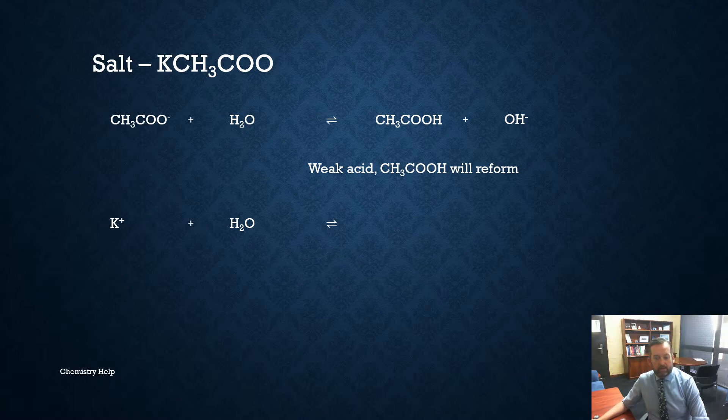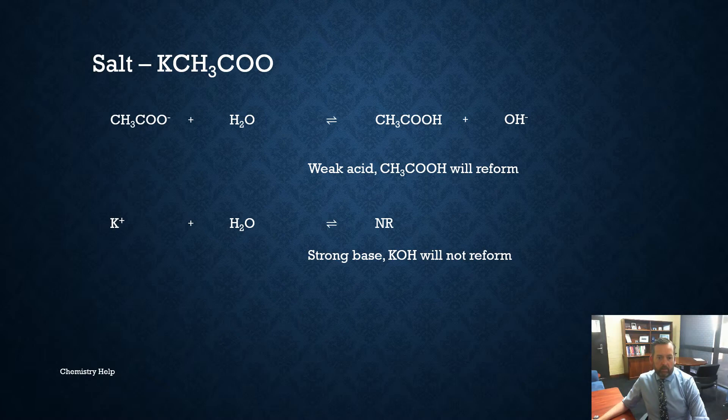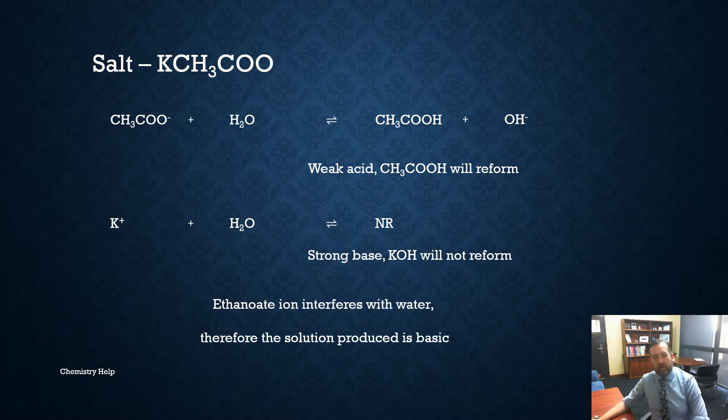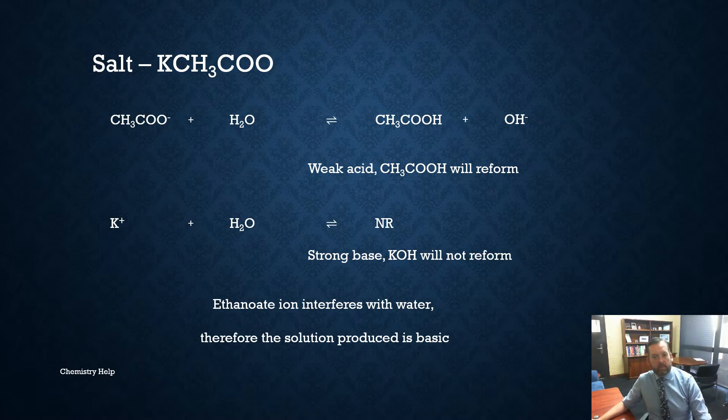The potassium ion will not react with water, will not reform the potassium hydroxide, so therefore we have no interference there whatsoever. So only the ethanoate ion interferes with water therefore the solution produced is going to be basic. All right so we have a situation that we have a basic solution this time.